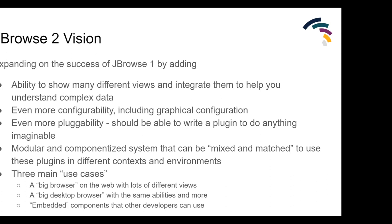One nice thing about rewriting in newer web technologies is we can use the same code base to produce a number of different products that run in different contexts. JBrowse1 only ran on the web - you'd have to install it and have a web server. But using modern technologies, we can create a web view and also run on the desktop using a newer technology called Electron. JBrowse1 was started in 2007, so that was a lot of years ago now, and Scott and I have been working together for many of those years.